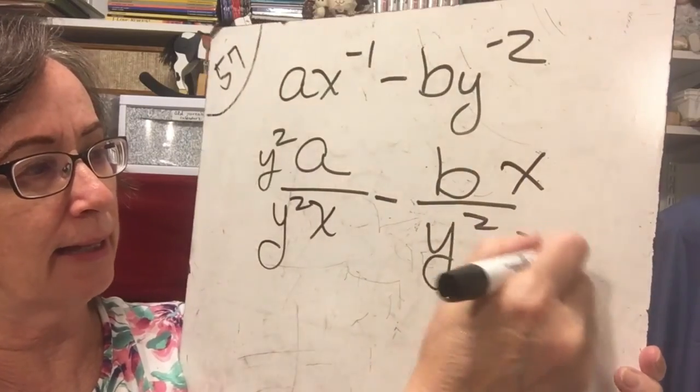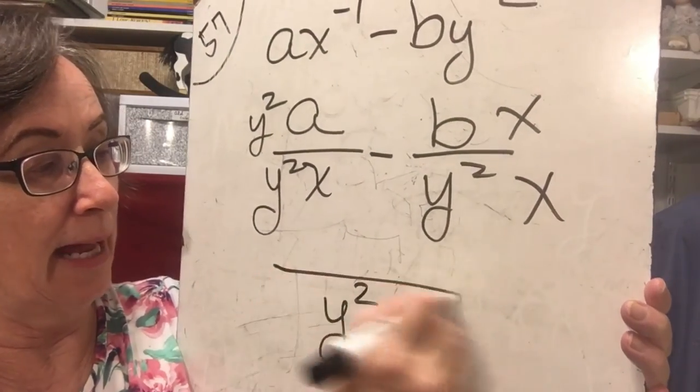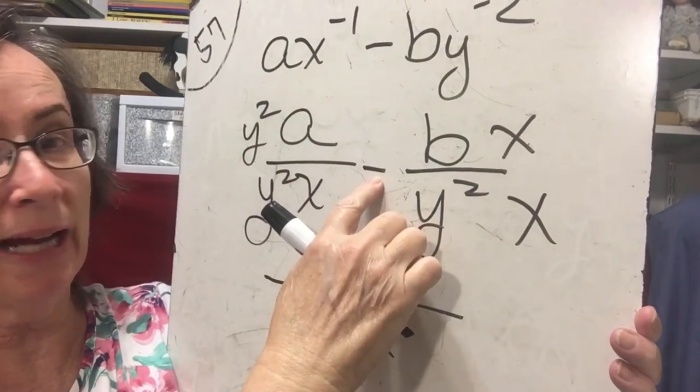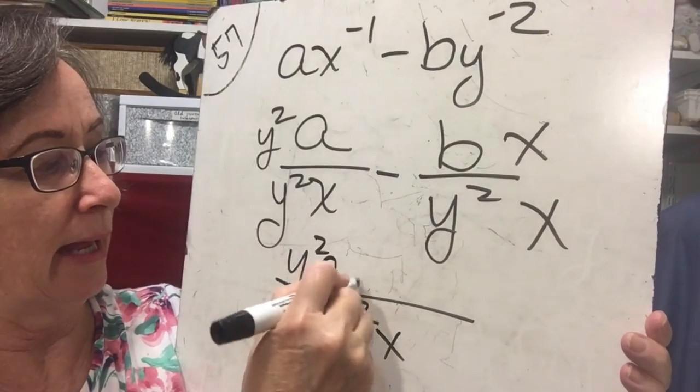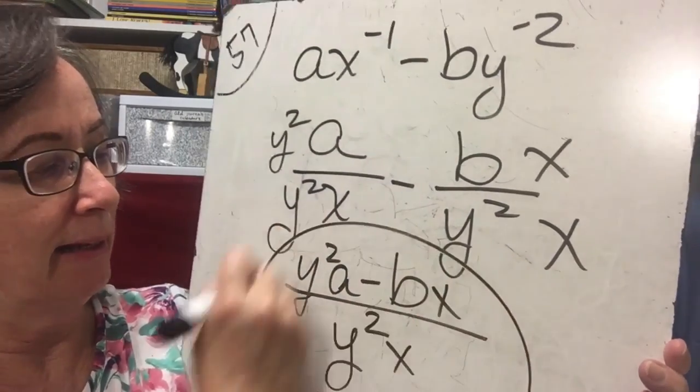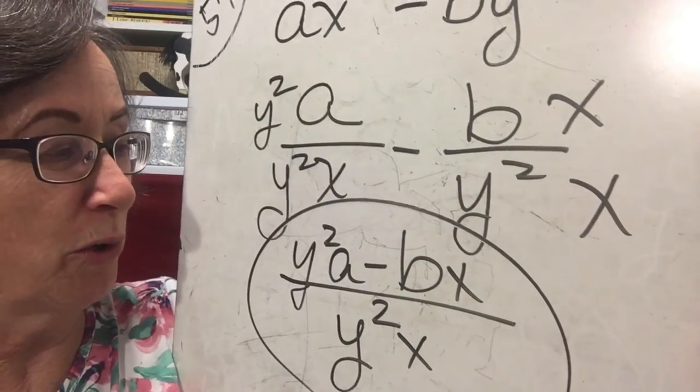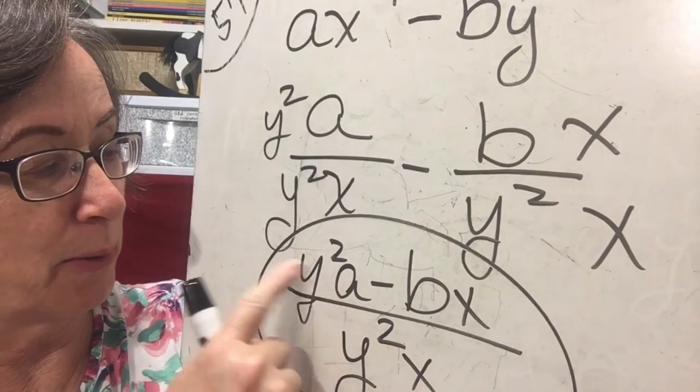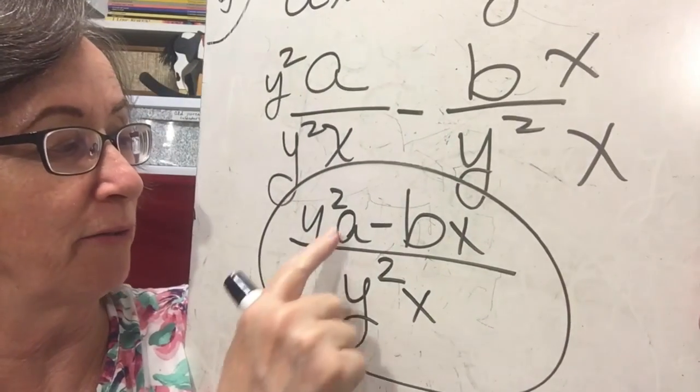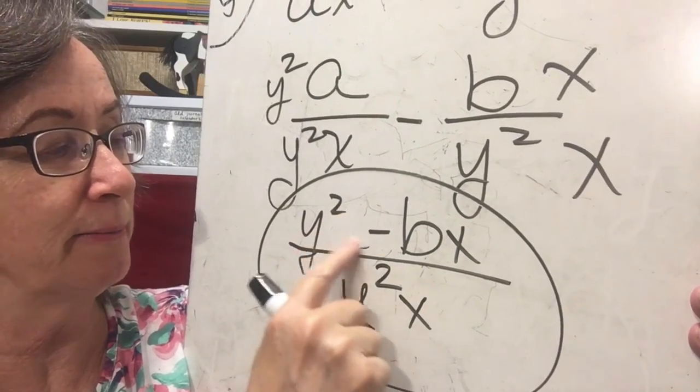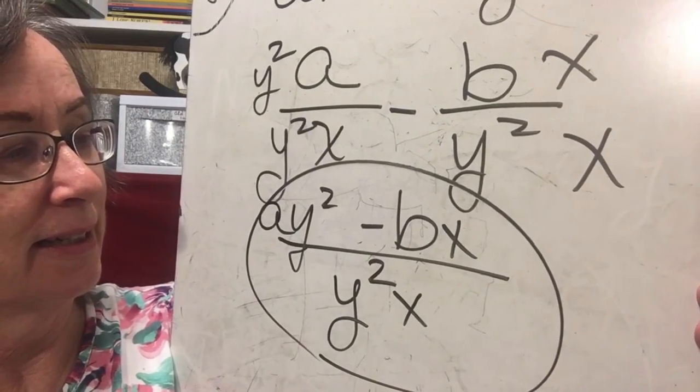is the same on both sides and I am subtracting instead of adding so I'm going to have a y squared a minus b x and you'll notice in your bucket really doesn't matter which order you write your variables in I think they probably put the a in front but it's not that important so if you put the a in front that's fine if you left it in the back that's fine that's it